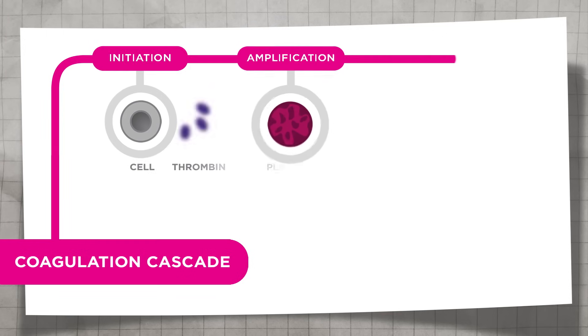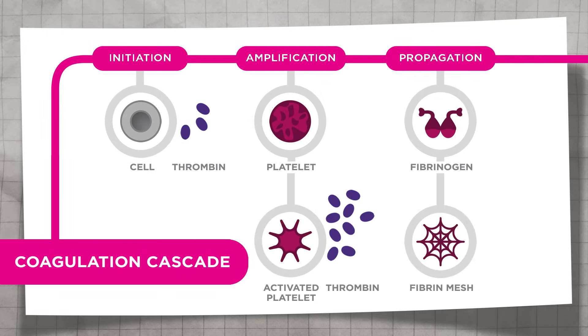At the same time, a protein called tissue factor triggers initiation of the coagulation cascade, the process that leads to full activation of platelets and the generation of fibrin and clot formation.